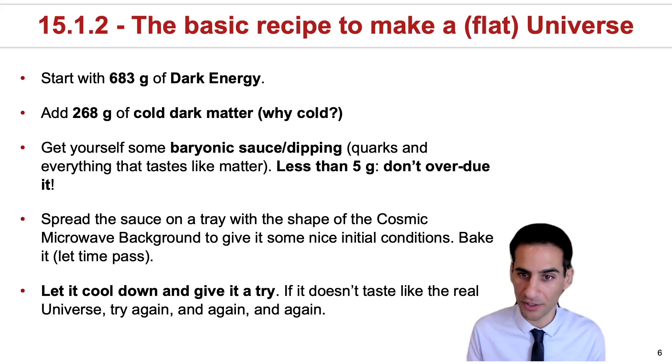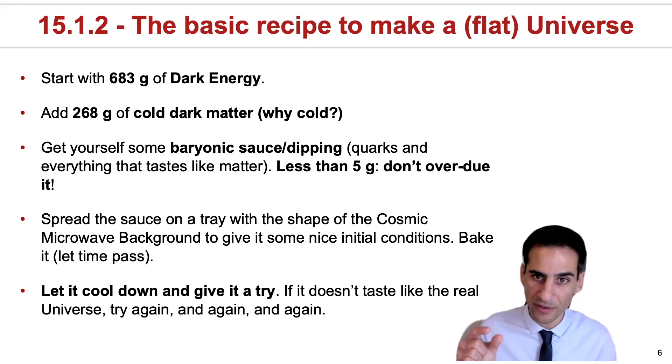By doing a lot of work, we now have a decent basic recipe of how you would make a universe that is flat in terms of its geometry. If you wanted to do a universe with about one kilogram in mass, these are the sort of ingredients you'd need. Most of it is in the form of dark energy, so you need almost 700 grams of dark energy. The other main ingredient is dark matter—something like 268 grams.